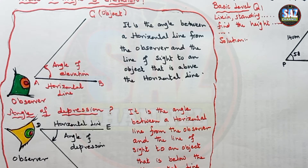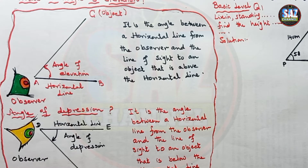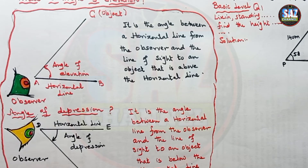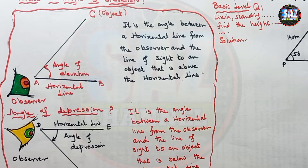In order to understand these two concepts, imagine that you are standing on the top of your house and you are looking at a bird which is flying in the sky, or a kite which is flying in the sky. In order to look at the kite flying in the sky, in what formation do you have to keep your eye and the position of your neck?